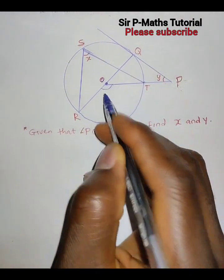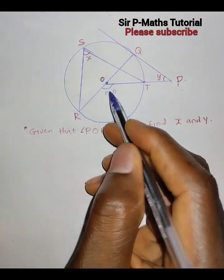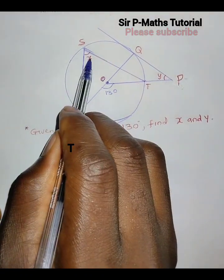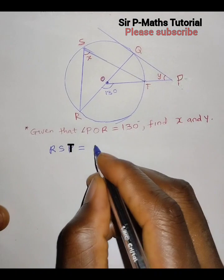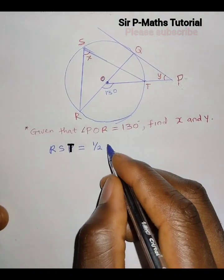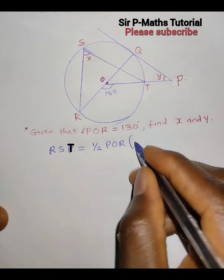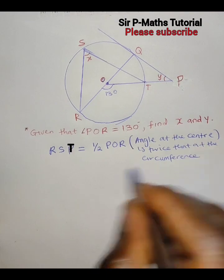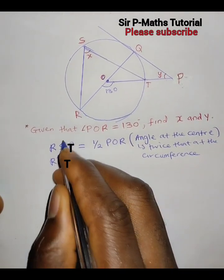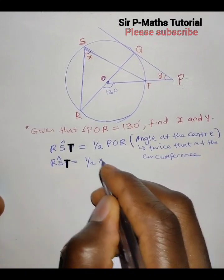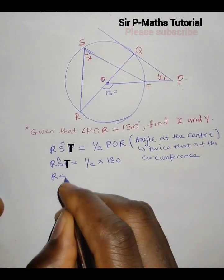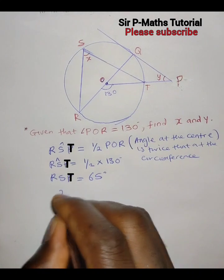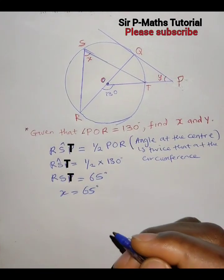This gives us a clue: since BOR is 130 degrees, angle RSP must be half of this. So RSP, which is X, is equal to half of BOR. The reason is the angle at the center is twice the angle at the circumference. Therefore RSP equals half of 130, which gives us X equal to 65 degrees.